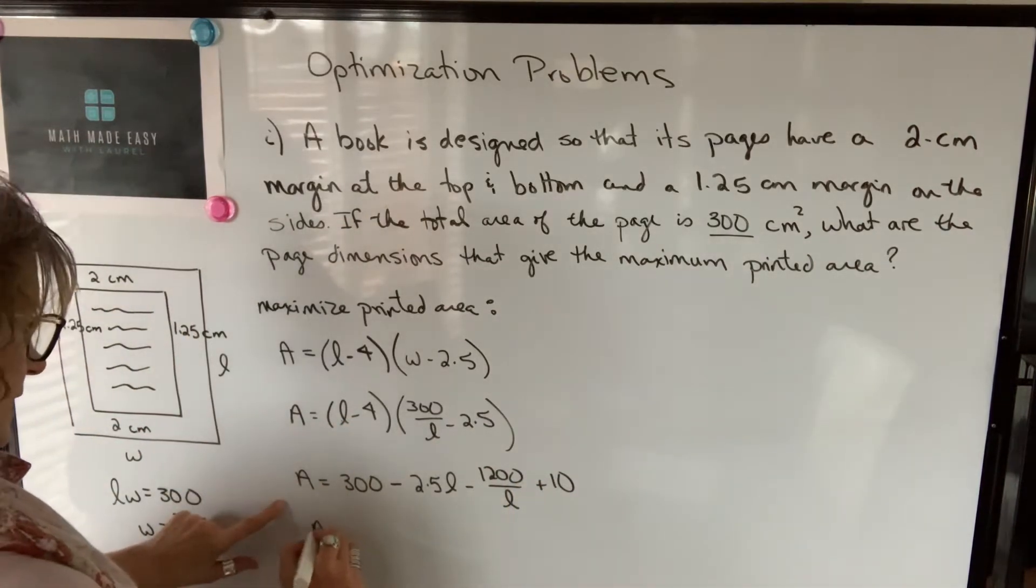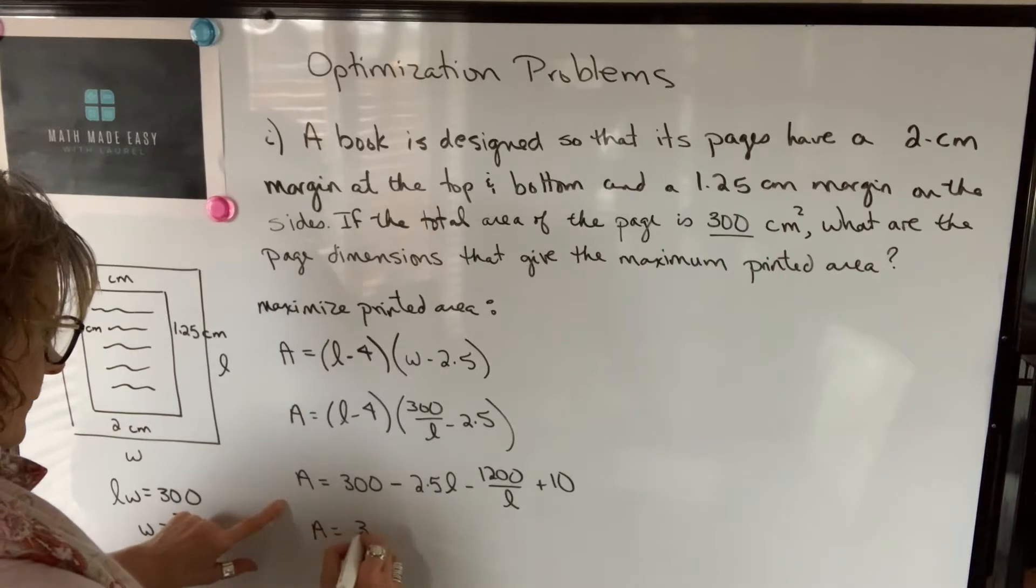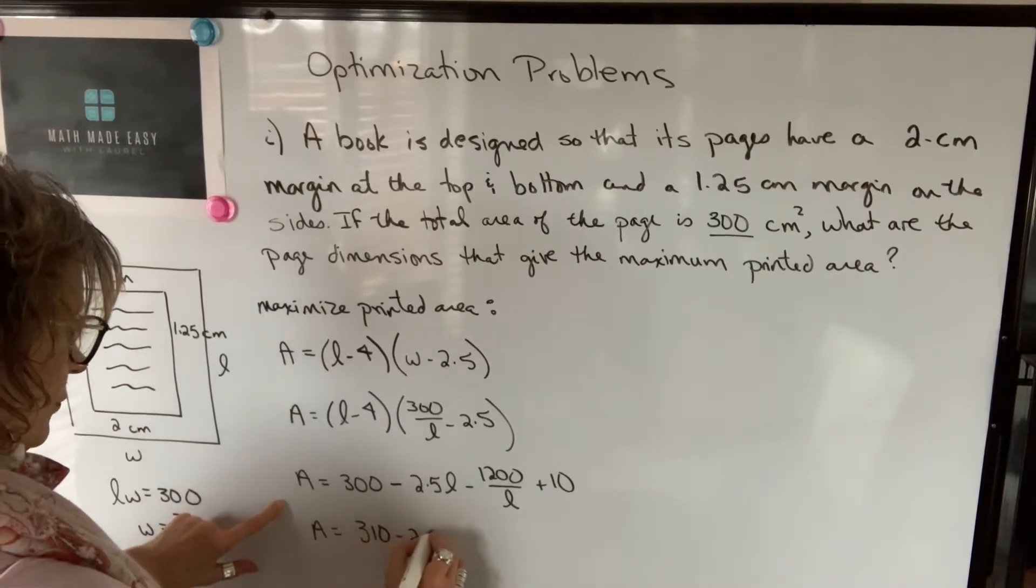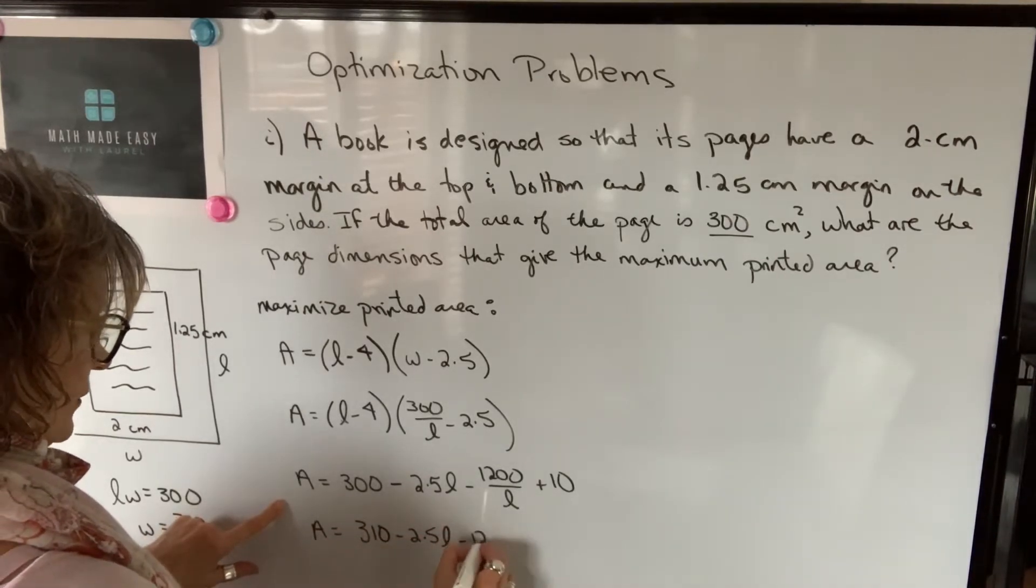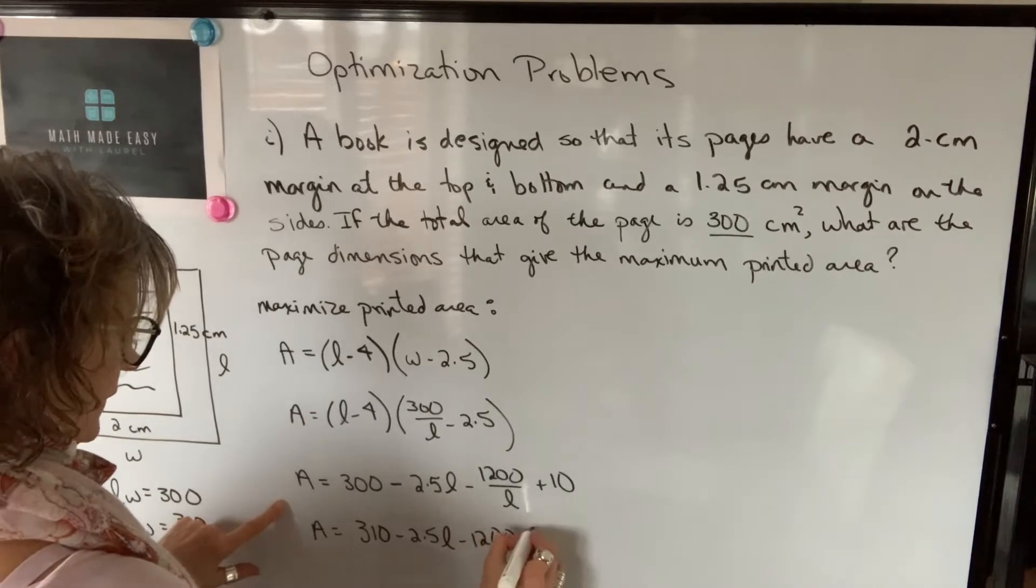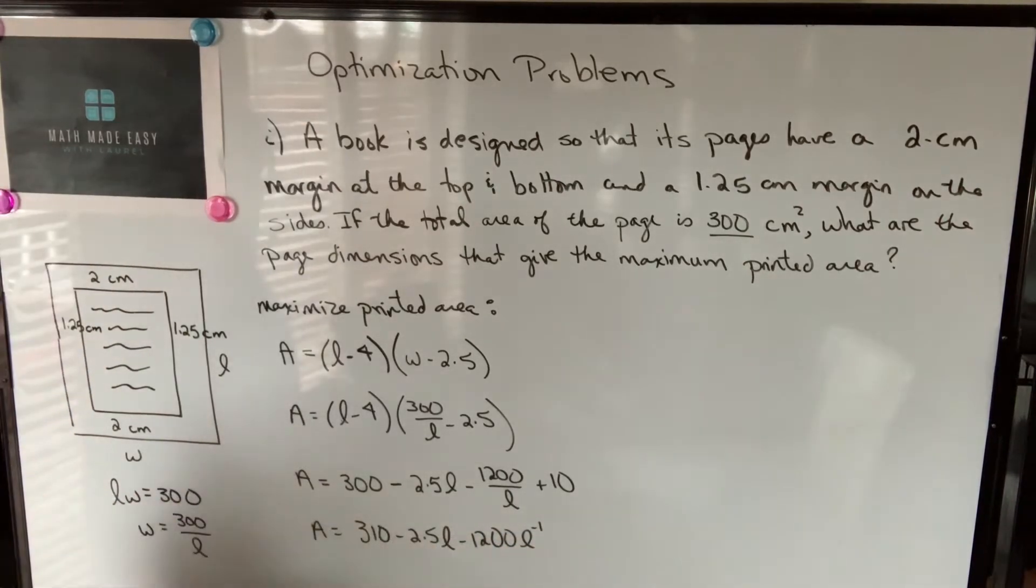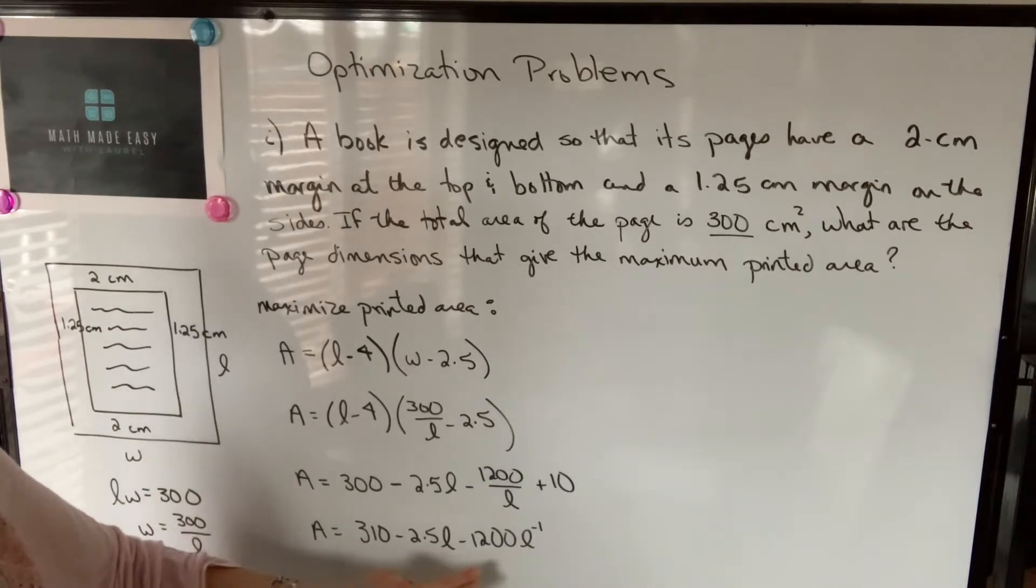And then I'm going to express this as 310 minus 2.5L minus 1200L to the negative one. That's just going to make it easier to differentiate. Now that I have my function that needs to be maximized, and I have it in terms of one variable, and I have it simplified,